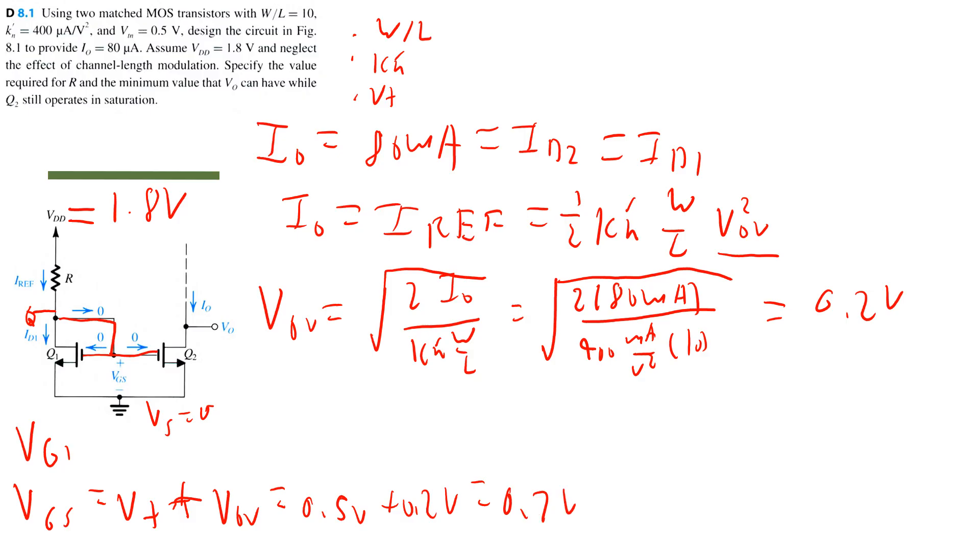So that means that VG at Q1 is equal to 0 because the voltage at the source is 0 plus the voltage from gate to source or 0.7 volts.